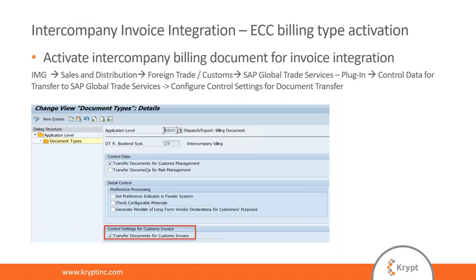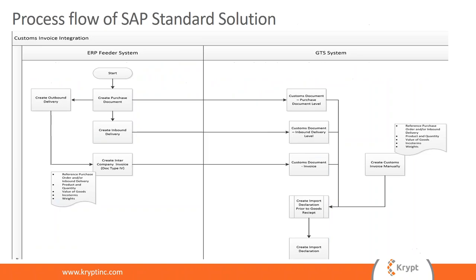Finally, on the ECC side — the first three customizing steps were on GTS, and this one is on ECC — we have to make the activation to transfer customs documents for the customs invoice. Without this, the system will not know that the intercompany billing document is supposed to call the function module to create the customs invoice in GTS. This is obviously a very important setting for the integration.